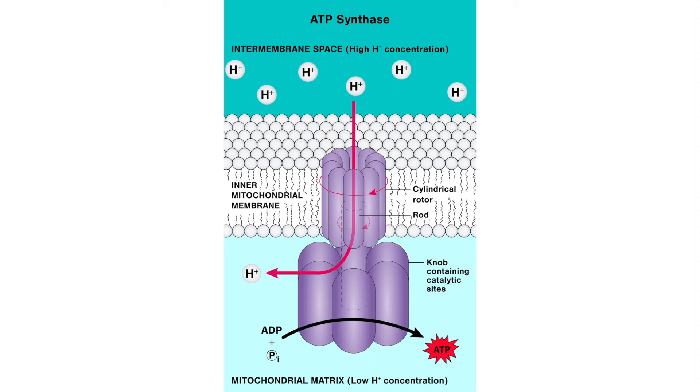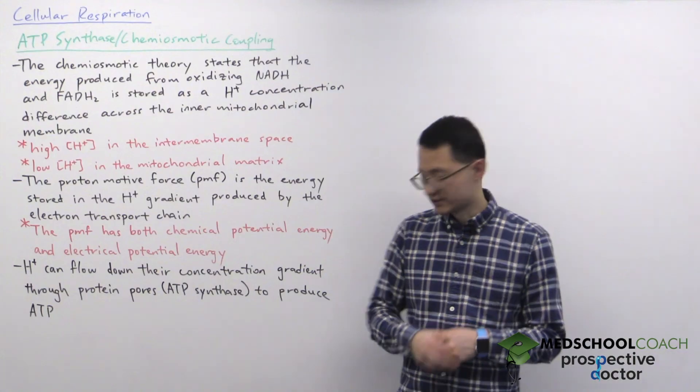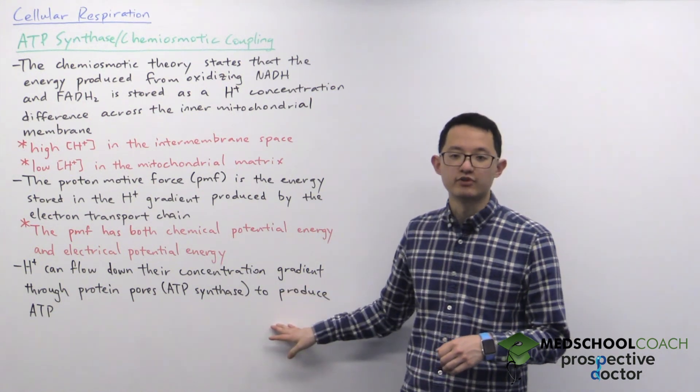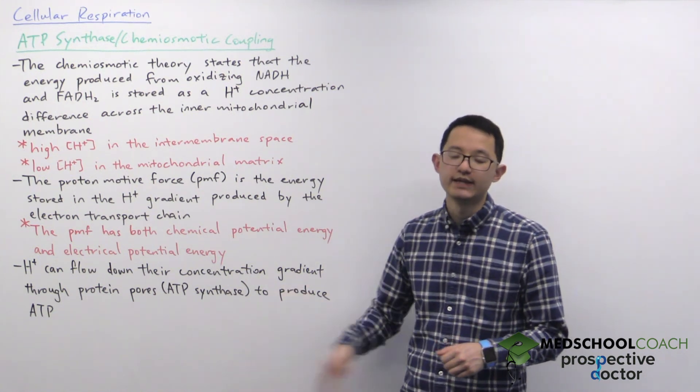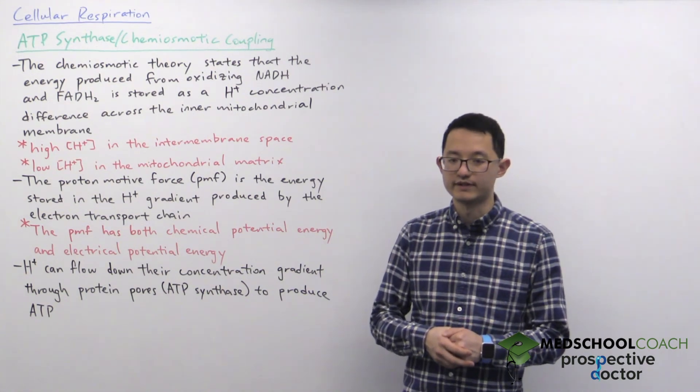And as the protons pass through ATP synthase, the ATP synthase will couple the proton transfer to the synthesis of new ATP molecules. So that's essentially how we're able to produce lots of ATP using that proton concentration difference.